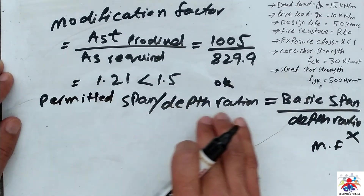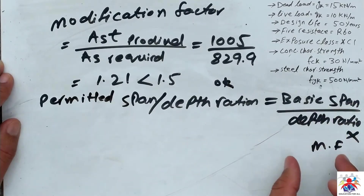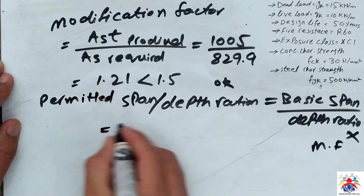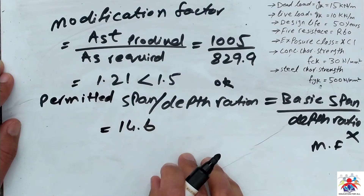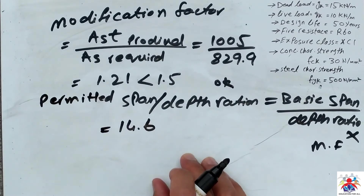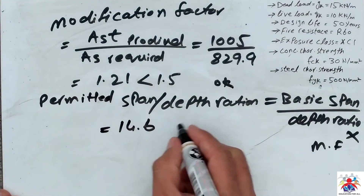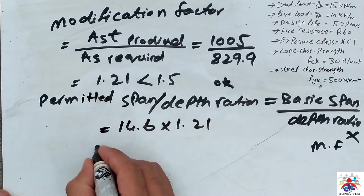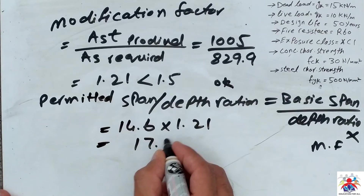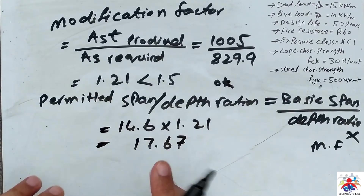The permitted span-to-depth ratio equals the basic span-to-depth ratio multiplied by the modification factor. So: 14.6 (from the Eurocode table) multiplied by 1.21 gives a permitted ratio of 17.67.